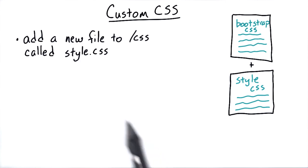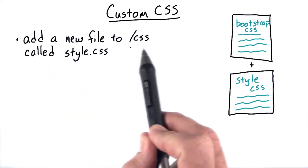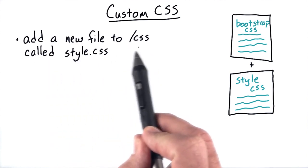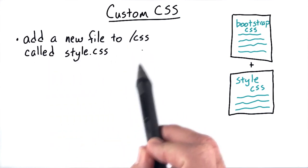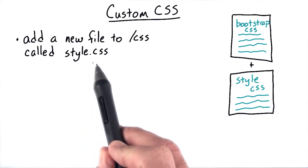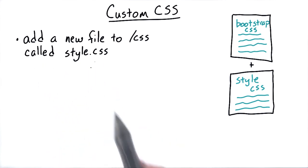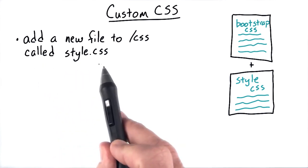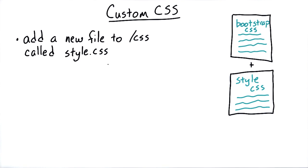To do so, add a new file to the CSS directory, or the CSS folder, called style.css. Inside style.css will include the styles that are unique to our page. Remember, you're going to want to start working with the largest elements and then move to smaller and more specific elements inside style.css.